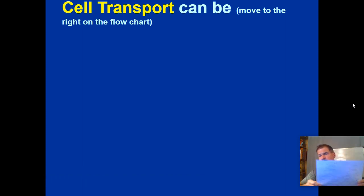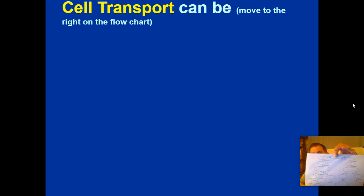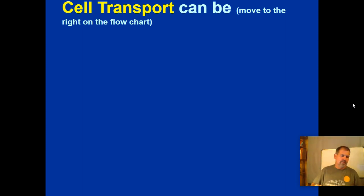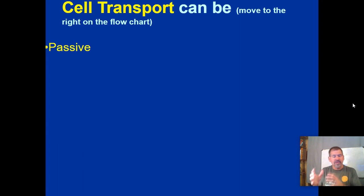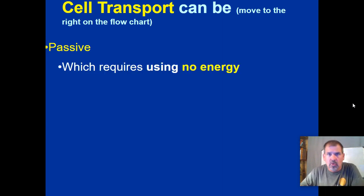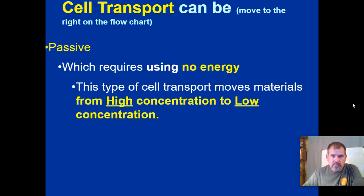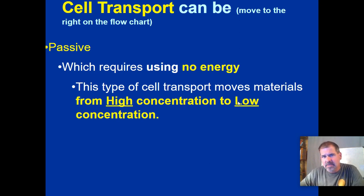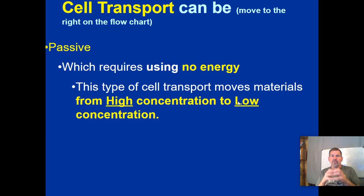Now we're transitioning to the first flowchart. We'll go down the right side first, then the left. Cell transport goes in the top circle. Moving to the right: passive transport goes in the second oval. Passive transport requires no energy and moves materials from high concentration to low concentration — from where particles are more crowded to where they are less crowded. Particles naturally want to move from where there's more to where there's less.